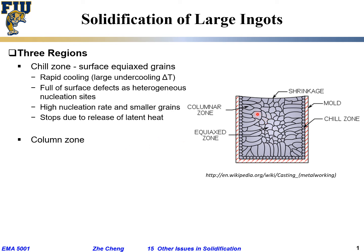During this stage of solidification, the growth of the crystal is controlled by heat extraction, and the growth direction is typically along the direction of heat transfer. For example, if the mold wall is in a given location, the heat conduction is horizontal, while at the bottom the heat conduction is vertical. So you have different growth directions depending on the direction of heat conduction in the columnar zone, while each individual grain grows longer following planar growth.